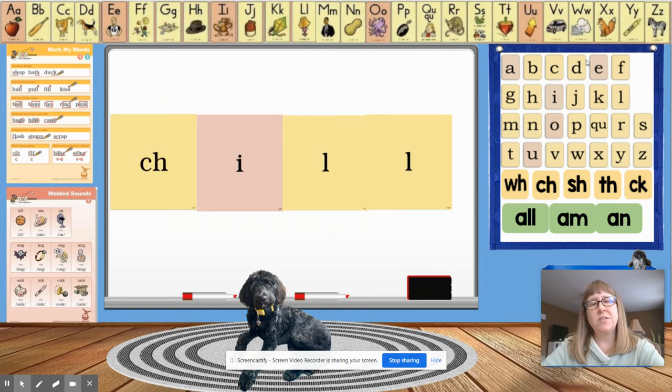Okay, look at this word. What's the word? Chill, that's right. And how are we going to mark it? We're going to underline the digraph and put a star over our double l, our bonus l.